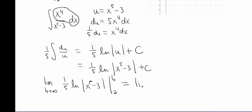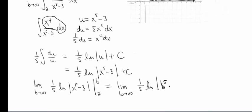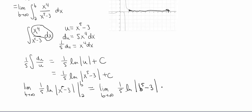Okay, so plugging in our endpoints, it's going to be the limit as b approaches infinity. 1/5 natural log of b to the 5th minus 3 minus 1/5 natural log of 2 to the 5th minus 3.